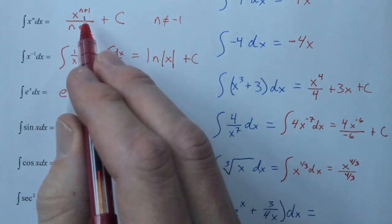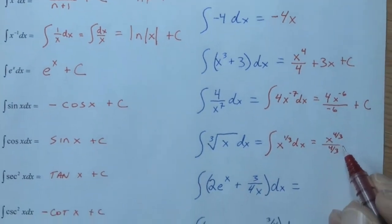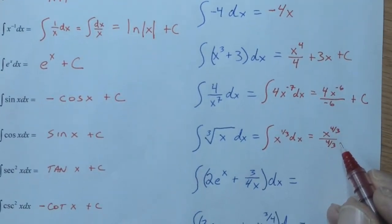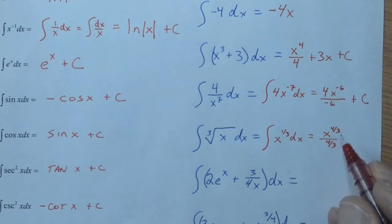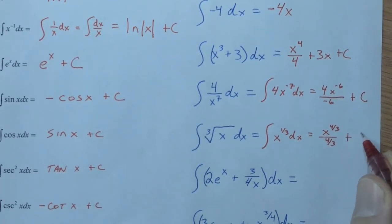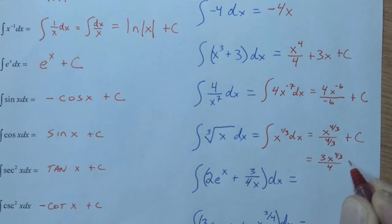1 3rd plus 1 is 4 3rds. You can write 1 1 3rd, but it's best to stay away from mixed numbers. Improper fractions are the way to go. Don't want to forget our plus c. Also, just keep in mind that if we're dividing by 4 3rds, that's the same thing as multiplying by 3 quarters. So, if this was a multiple choice question, it's quite possible you could see that as an answer as well.